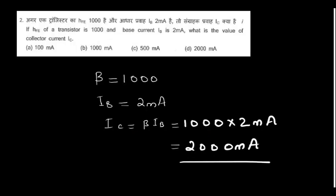If HFE of a transistor is 1000 and base current IB is 2 milliamps, what is the value of collector current? You can simply use the relation IC equals beta times IB, so you'll get 2000 milliamps.